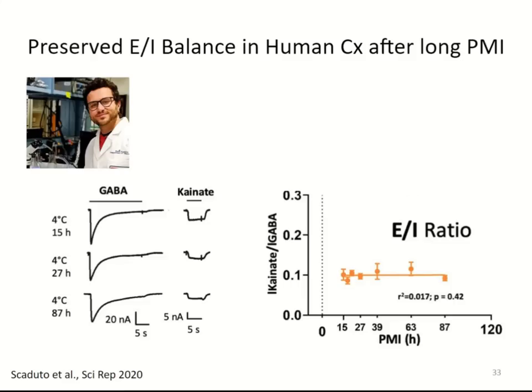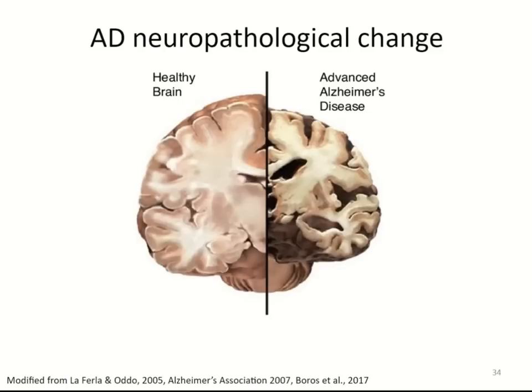Importantly, kainate and GABA receptors are degraded similarly — equally. So when we take the ratio of one to the other, there is not much variation. Looking at post-mortem interval versus the ratio of kainate response over GABA response, the ratio varies only within a very narrow range. This means the EI ratio is consistent across post-mortem intervals.